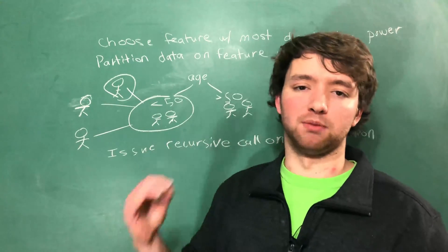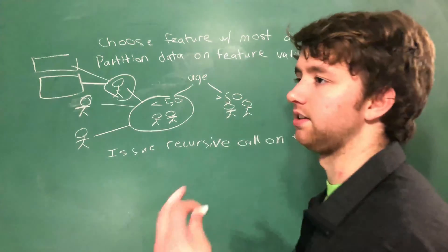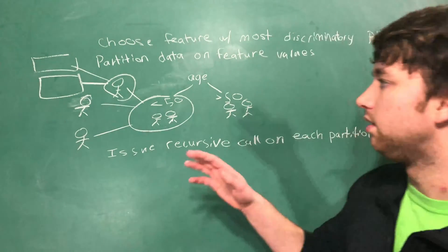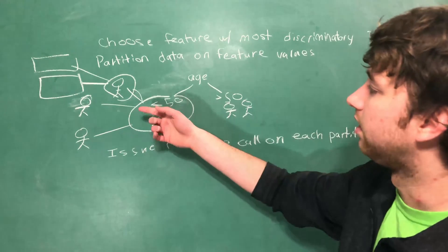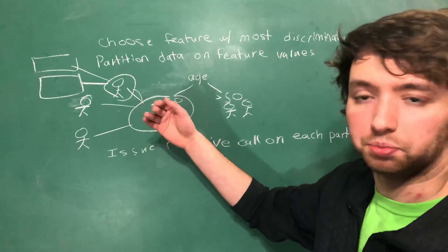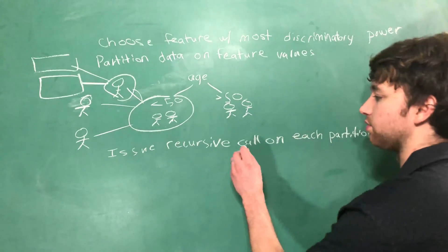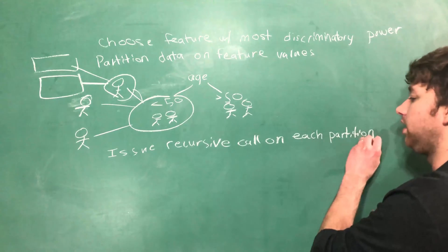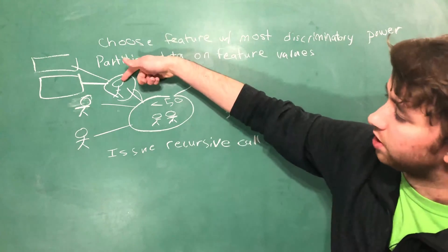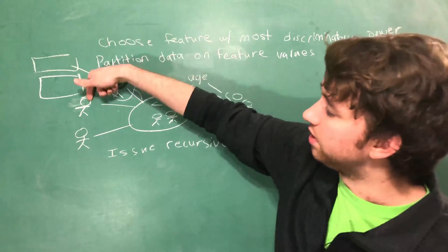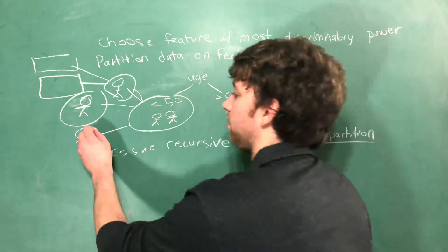So once we hit the base case and we split our data into diabetes and not diabetes, well, then it's going to go up a step. And now we're back into the previous function, which hasn't finished yet, because you see here it says recursive call on each partition. So after it finishes this partition, it's going to go down to this partition and do the same thing. And then it'll go up to this one again and down to this one.